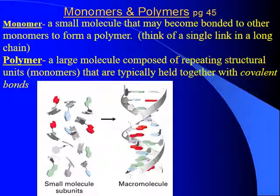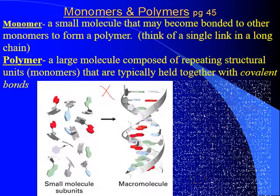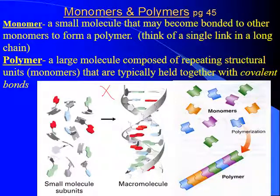This picture here shows that. The best analogy you can probably come up with is think of a link and a chain. The link would be the monomer, and the whole chain would be the polymer. So the monomer is the link, and the polymer is the chain.